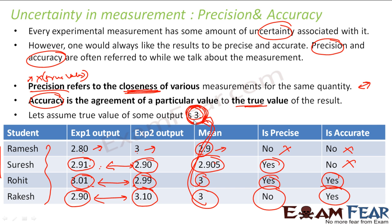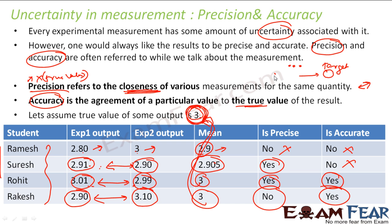In English terms, when you say someone is precise, it means whatever they do, they do with care and make sure all the results they get are almost the same — that is precision, not accuracy. When I talk about accuracy, there is a target and you have to match the target — then you are accurate. For precision, you are not at all bothered about the output or target; you are just focused on how close the answers are to each other. For example, getting 2.91, 2.90, and 2.905 — all very close — is precise. But when you check accuracy, you verify whether your target was 3 and whether the results are close to 3. If not, they are not accurate. Both are different concepts.